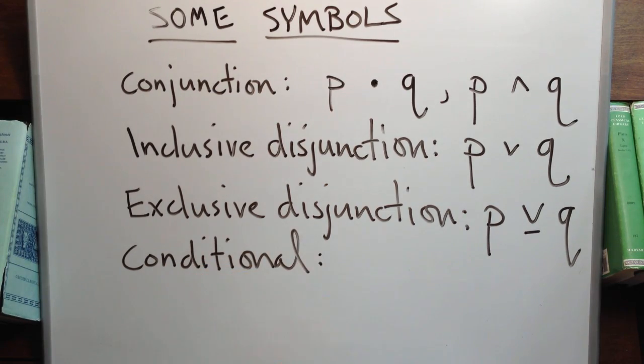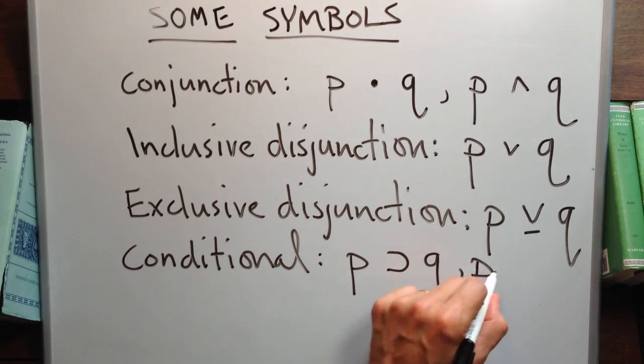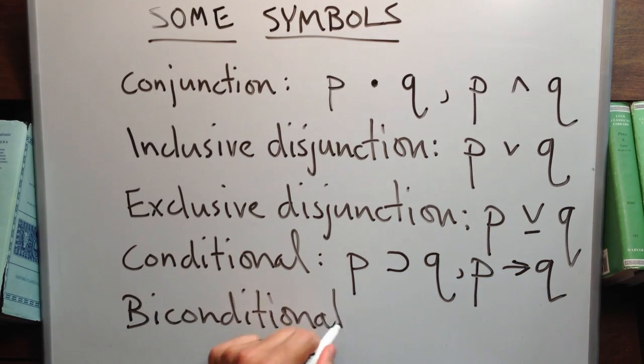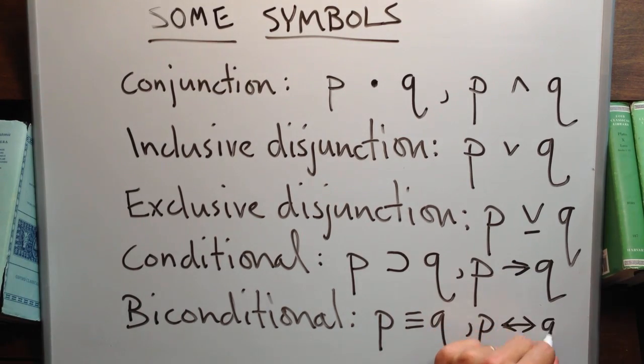For the conditional, we use a horseshoe on its side or an arrow to indicate if-then. And for the biconditional, we use a triple bar or an arrow pointing both directions.